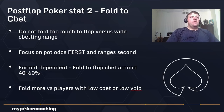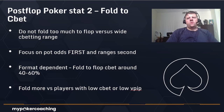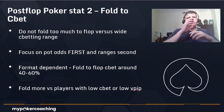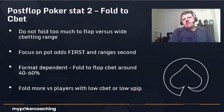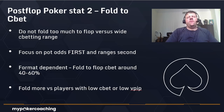Postflop stat number two is Fold to C-Bet. You don't want to fold too much to the flop — ranges are very wide. In my decision-making framework, the first thing to focus on is pot odds, and the second is ranges. If a player bets 25 percent of the pot, you should be calling around 70 percent of the time — the majority of your answers should not be fold. If they bet three-quarters pot, you'll be folding upwards of half the time. Versus very small bets, look for reasons to call, not reasons to fold.